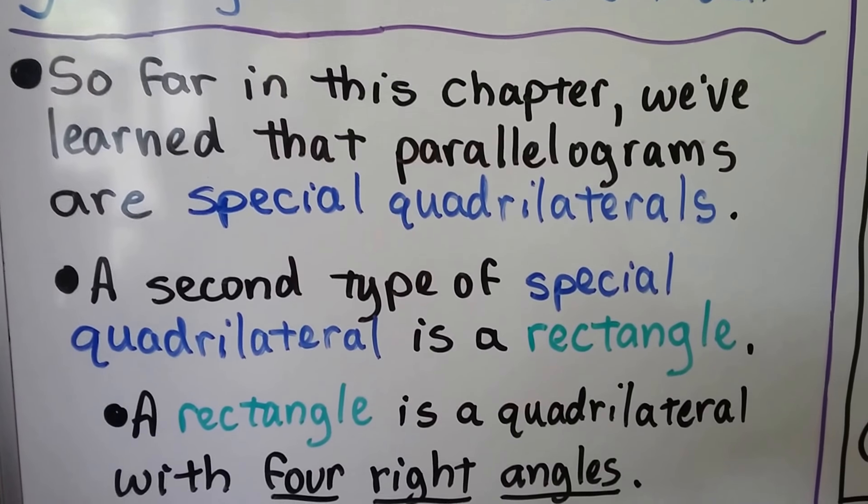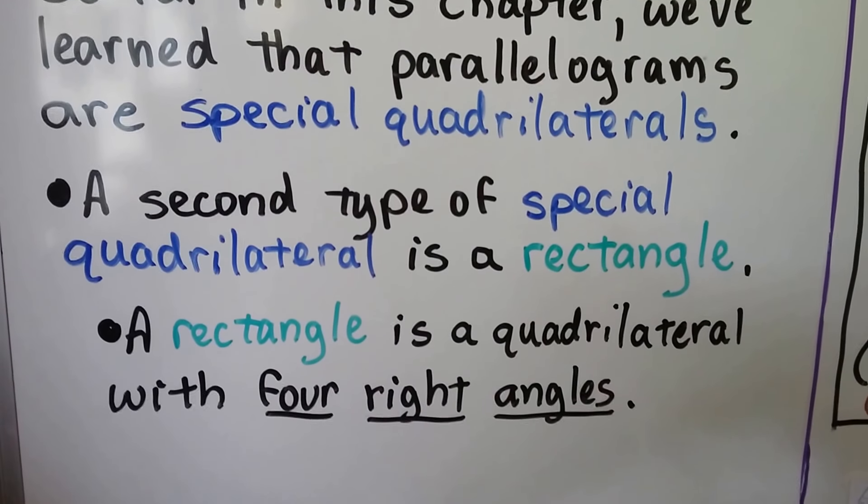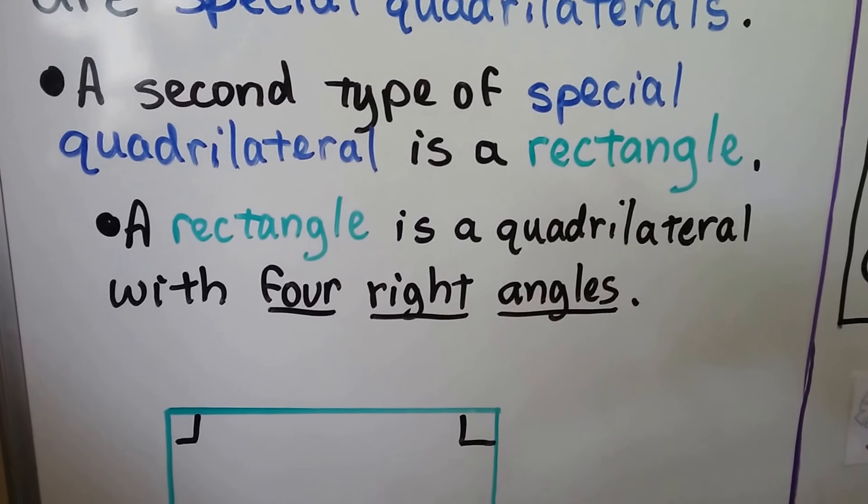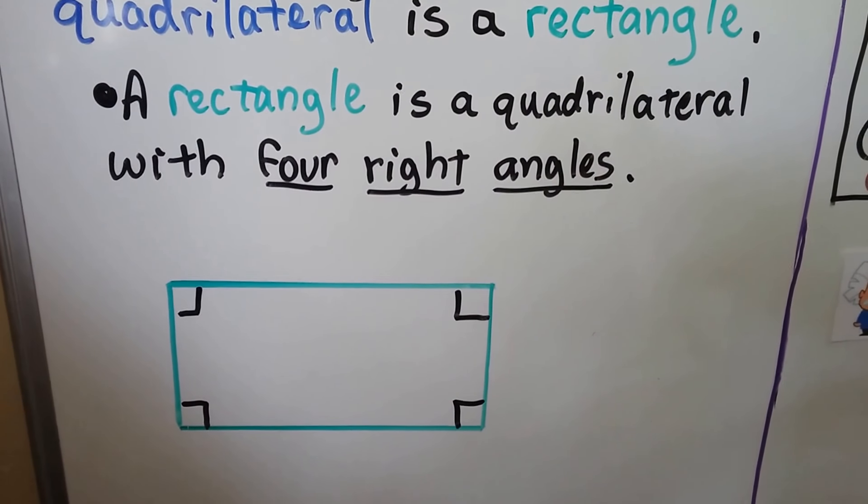So far in this chapter we've learned that parallelograms are special quadrilaterals. And a second type of special quadrilateral is a rectangle. A rectangle is a quadrilateral with four right angles.